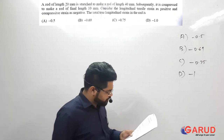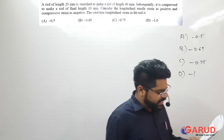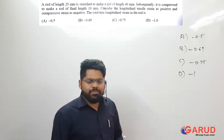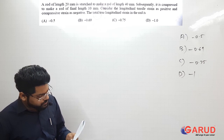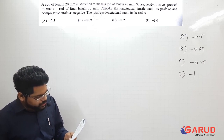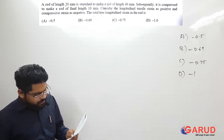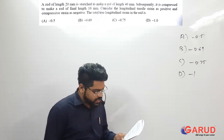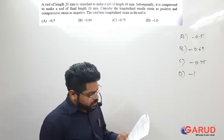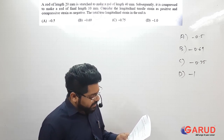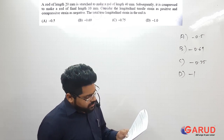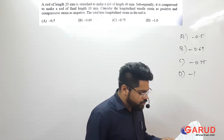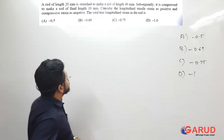Let's go to the next sum. This was asked in 2017 for two marks, Set 2. A rod of length 20 mm is stressed to make a rod of length 40 mm. Subsequently it is compressed to make a rod of final length 10 mm. Considering longitudinal tensile strain as positive and compressive strain as negative, find the total true longitudinal strain in the rod.